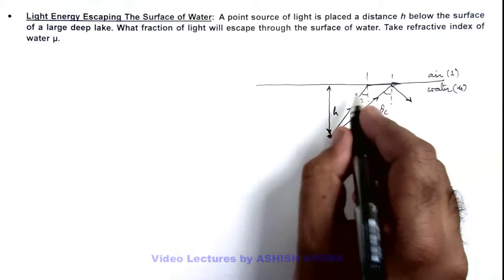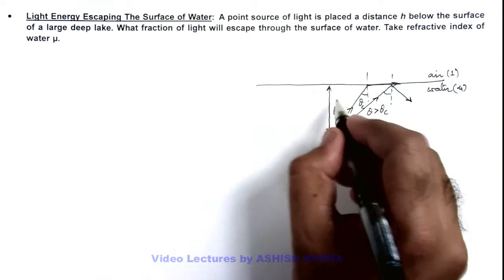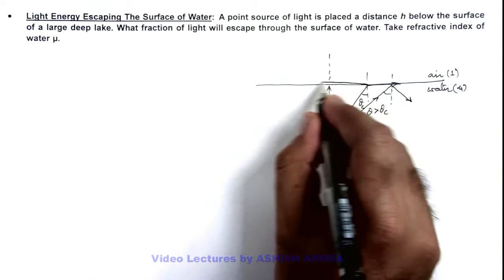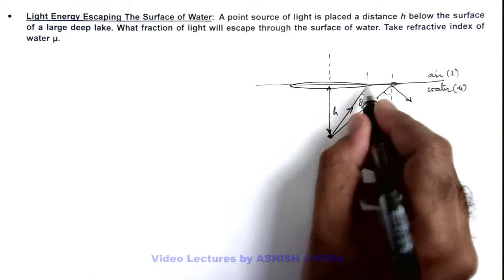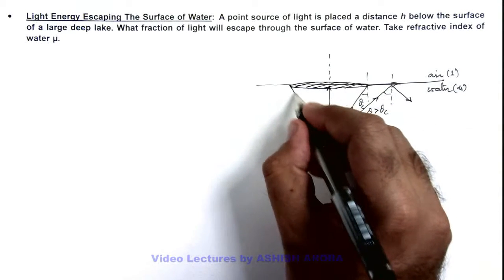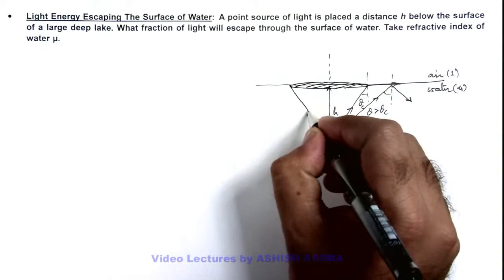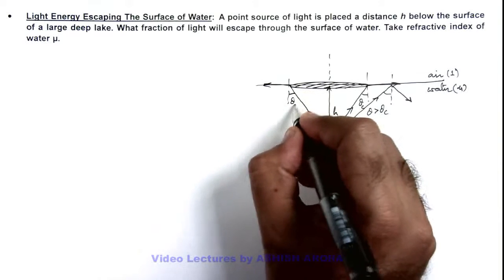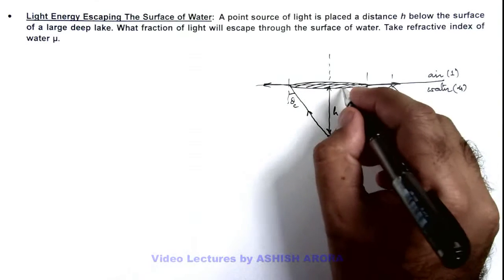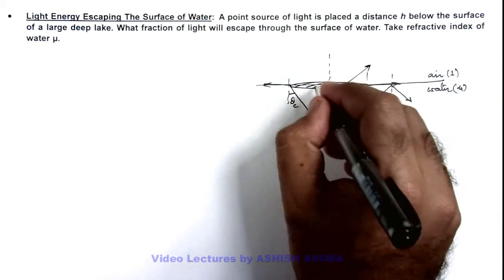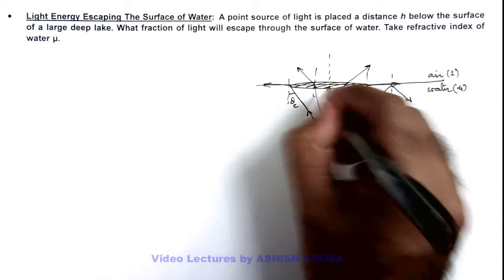So on all the sides with respect to this vertical line passing through the source we can say this is a circular area which I can shade. All the light rays which will incident on the circumference of this area will graze along the surface as this angle is critical angle, and all the light rays which will incident onto this circular area will escape to air after refracting from the surface.